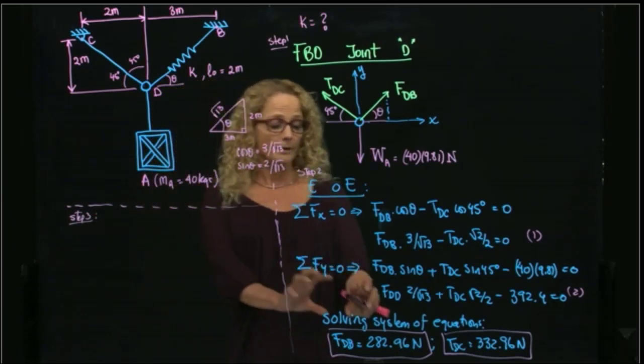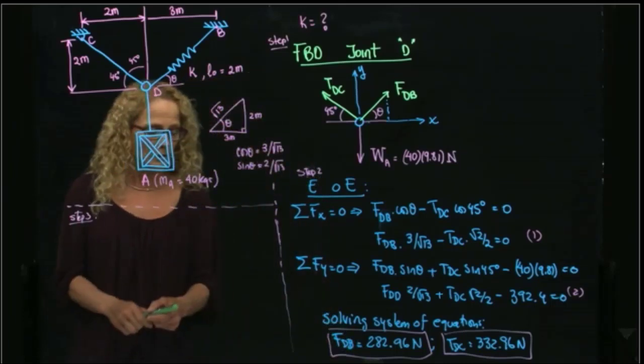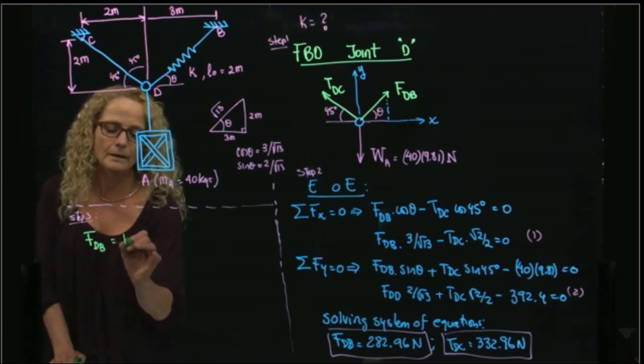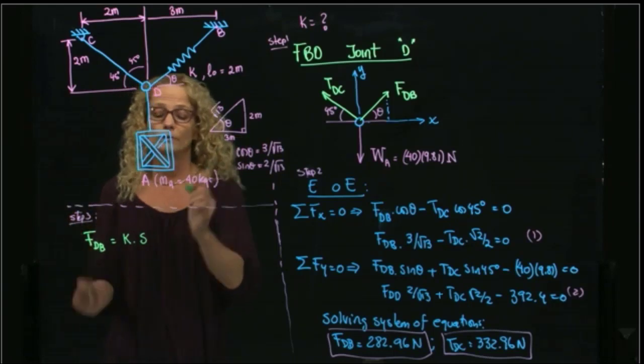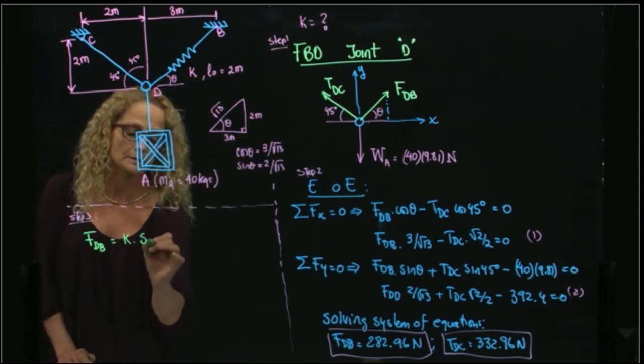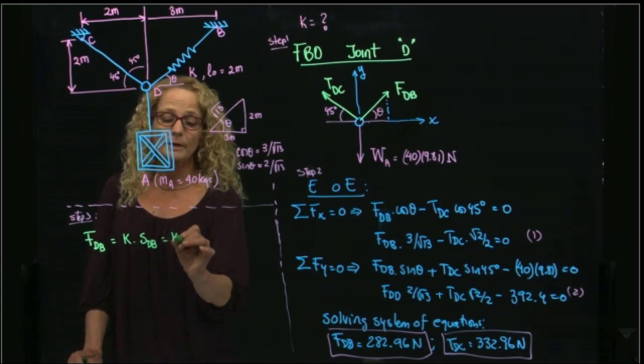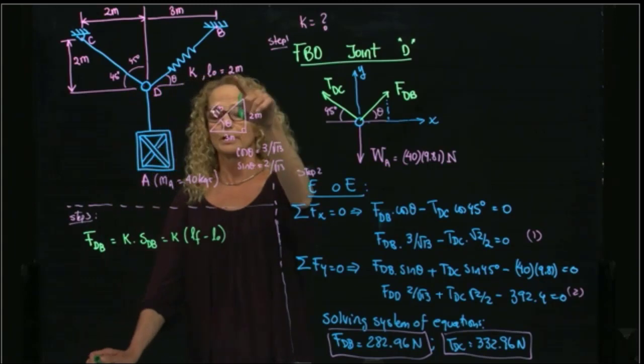So once we have the force of the spring, we are able to find k by the definition. So we know that the force of a spring, which I call it fdb, is the constant of the spring times the deformation of the spring, which is always the final length minus the initial length, the unstretched length.